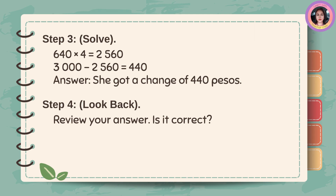Step 3: Solve. P640 times 4 is equal to P2,560. P3,000 minus P2,560 is equal to P440. Answer: She got a change of P440. Step 4: Look back — review your answer. Is it correct?